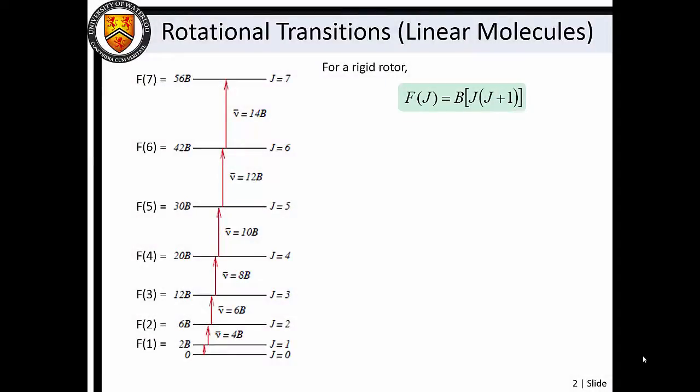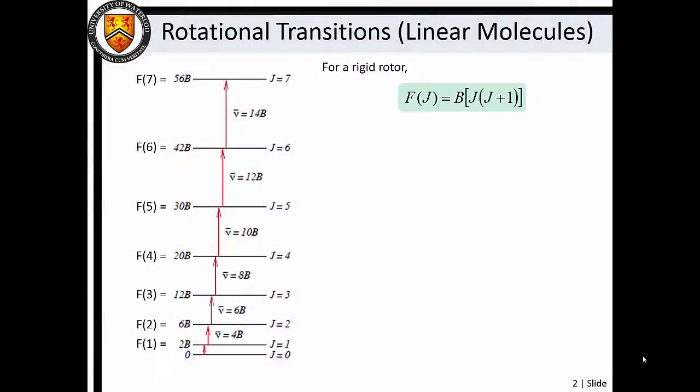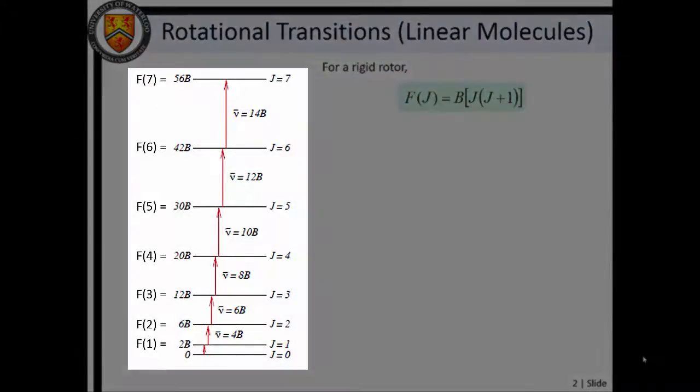Within the rigid rotor approximation, the rotational energies of linear molecules are described by the equation f(J) = B × J × (J + 1). This gives rise to a ladder of rotational energy levels which exhibit increasing separation with increasing J value.